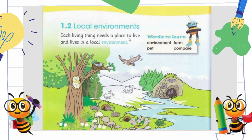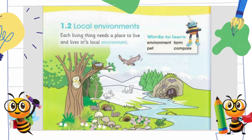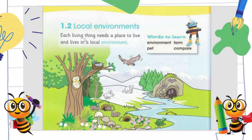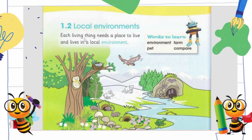Each living thing needs a place to live and lives in a local environment. In the last chapter we discussed living things and non-living things — plants are living things, animals are living things. Every living thing needs a place to live, and that place should be suitable for them. For example, if a human being lives in a glacier at minus five or six degrees, they cannot survive for more than two to three days because that place is not suitable for their body or health.